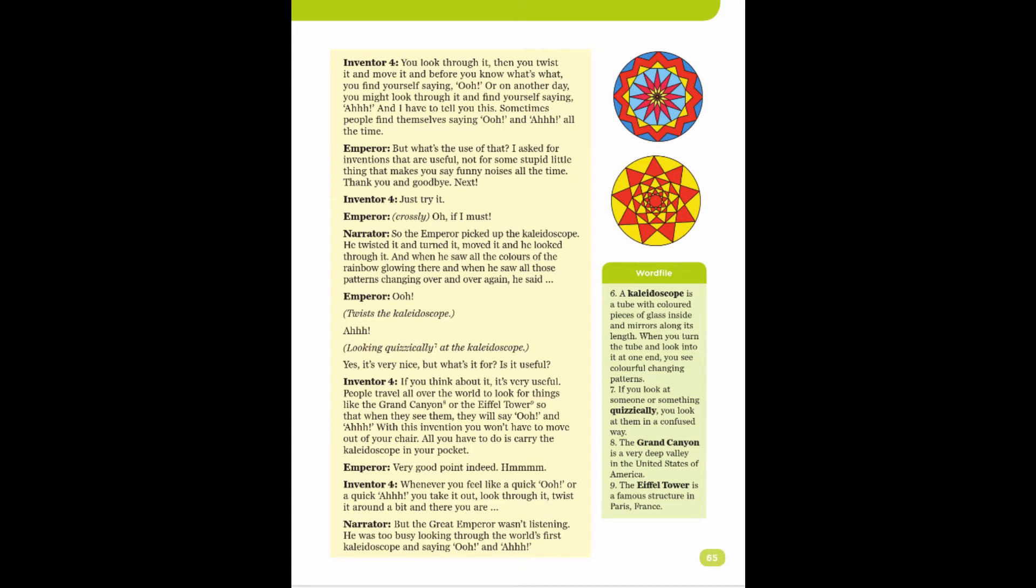Narrator: So the emperor picked up the kaleidoscope. He twisted it and turned it, moved it, and he looked through it. And when he saw all the colors of the rainbow glowing there, and when he saw all those patterns changing over and over again, he said 'ooh.'